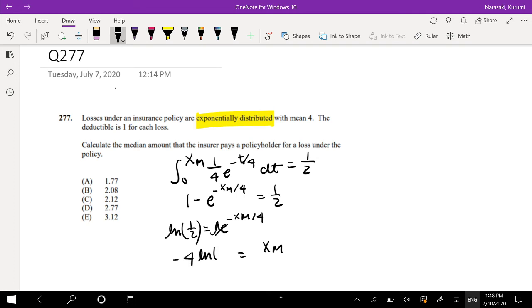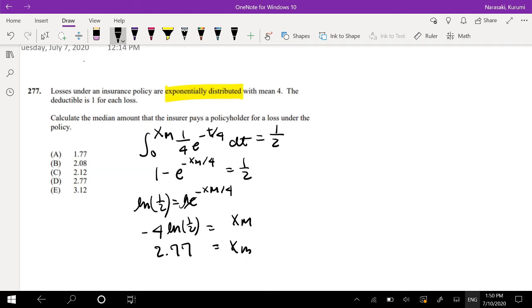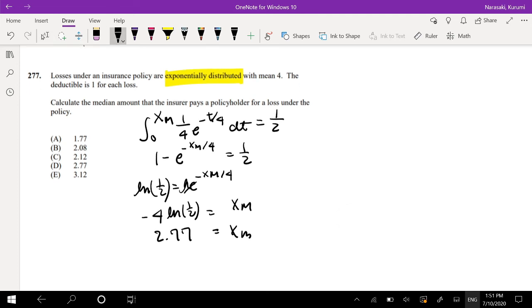Negative 4, natural log of 1 half. If I plug that into my calculator, that's approximately equal to... So this is what the median amount would be if there is no deductible. We know the deductible is 1, right?